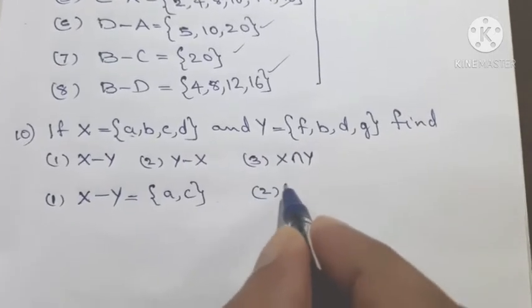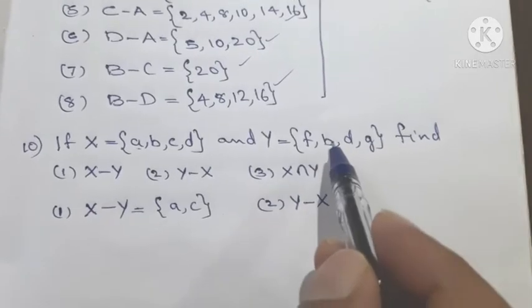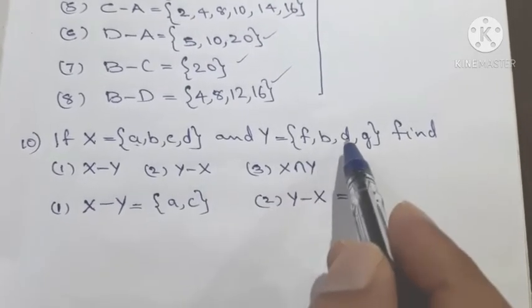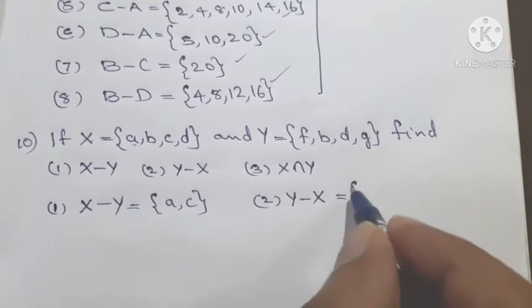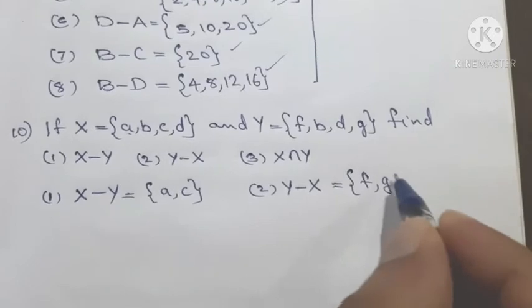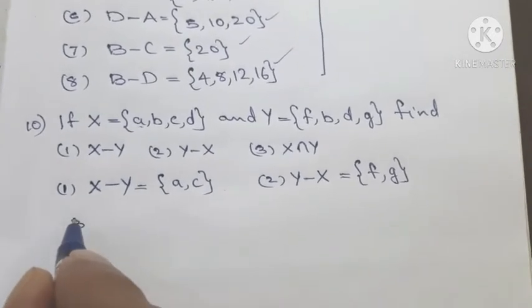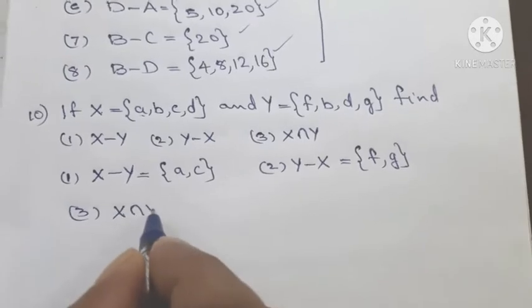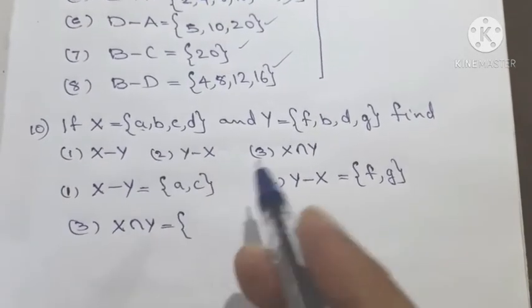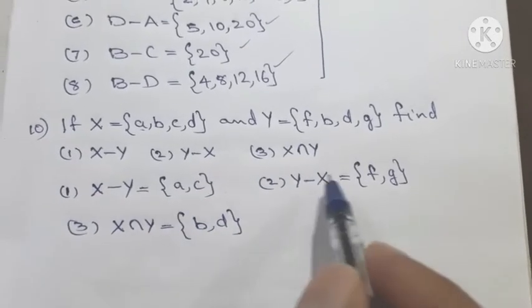For Y minus X: take elements of Y, remove those common with X. The common elements b and d are removed, leaving f and g. So Y minus X equals {f, g}. X intersection Y — the common elements of X and Y — equals {b, d}.